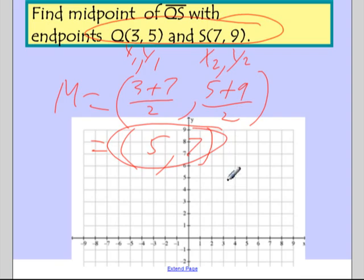Just to confirm that, if we look at 3, 5, that's Q, and S is at 7, 9. If I wanted to find the midpoint of the segment that connects them, it looks like, just visually looks like it should be right there. And our formula confirms that, that 5, 7 is in fact the midpoint.